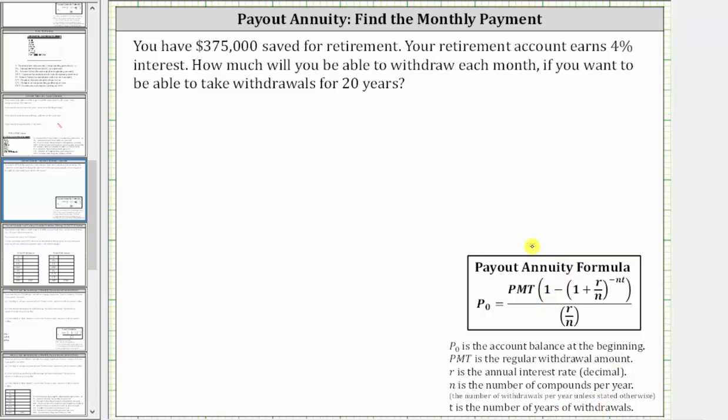Because you have $375,000 saved for retirement, P₀ is 375,000, giving us the equation 375,000 equals, and on the right side, we're trying to solve for PMT. So on the numerator, we have PMT, the regular withdrawal amount, times one minus, then in parentheses, one plus R divided by N, raised to the power of negative NT.